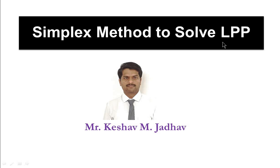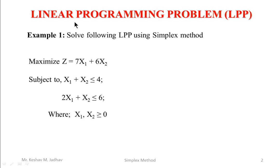Hello everyone. In this video you will learn how to solve a linear programming problem using simplex method. So let us consider a linear programming problem. Solve the following linear programming problem using simplex method: Maximize z equal to 7x1 plus 6x2, subjected to x1 plus x2 less than or equal to 4, then 2x1 plus x2 less than or equal to 6, where x1 and x2 are greater than or equal to 0.